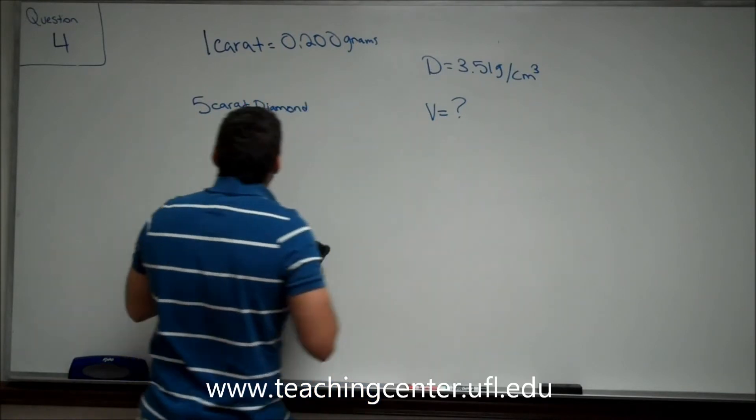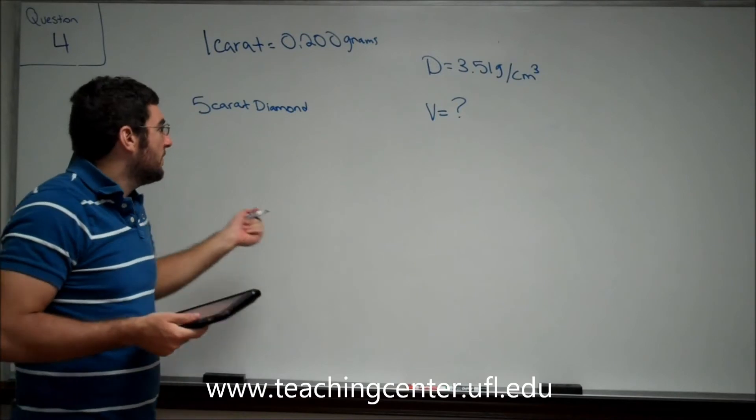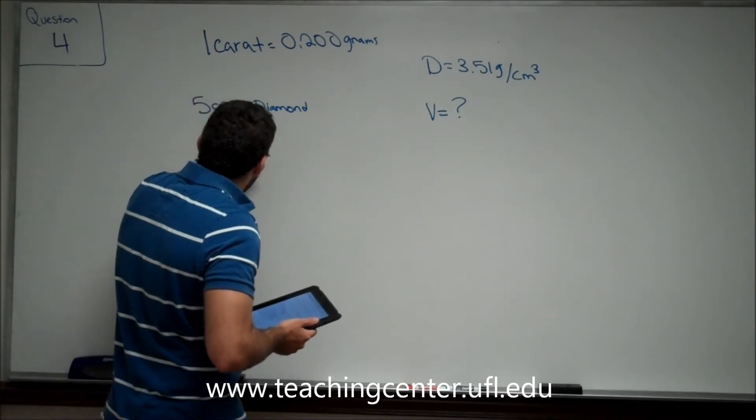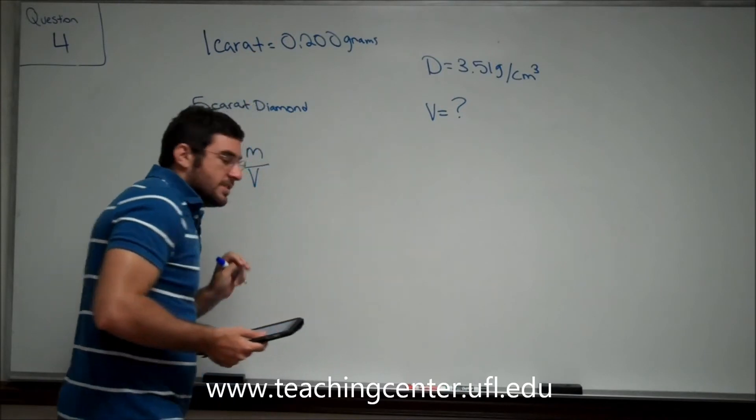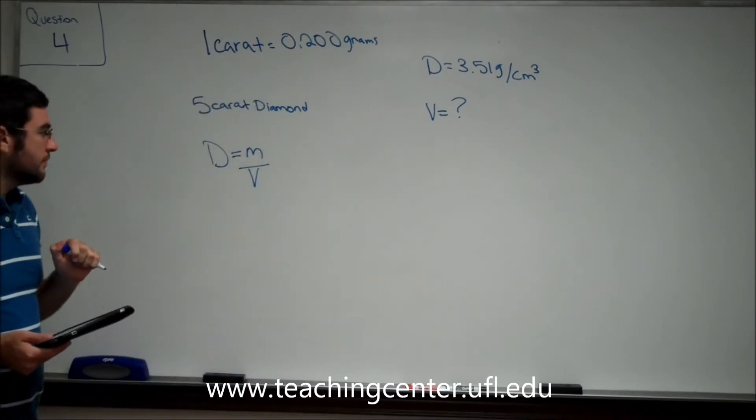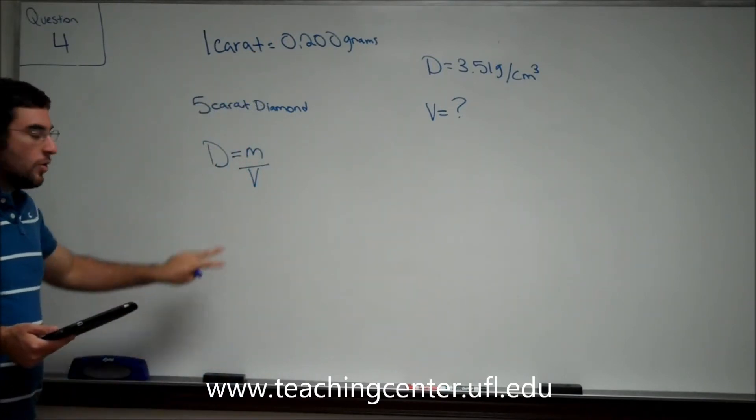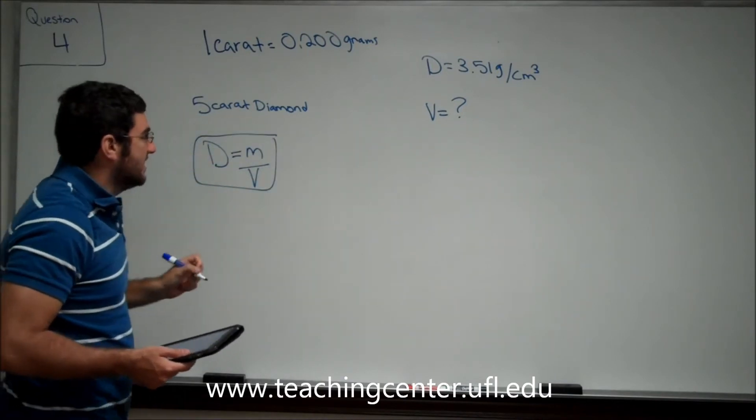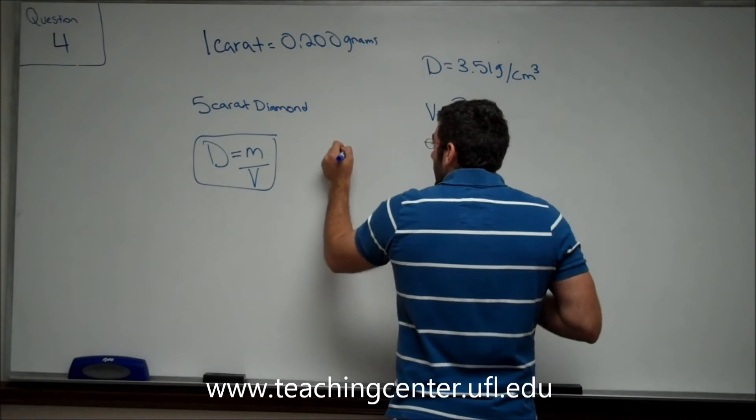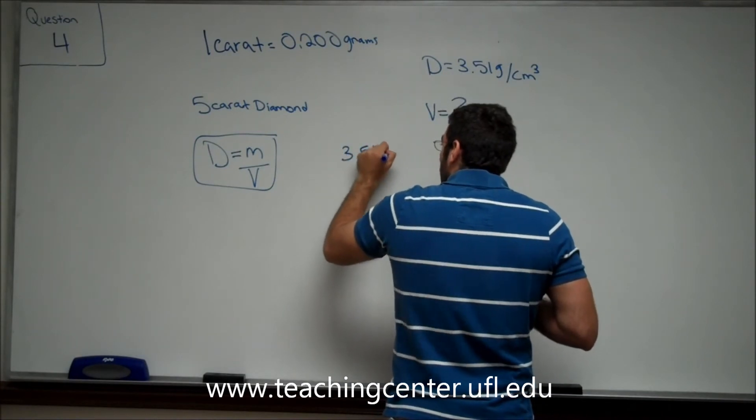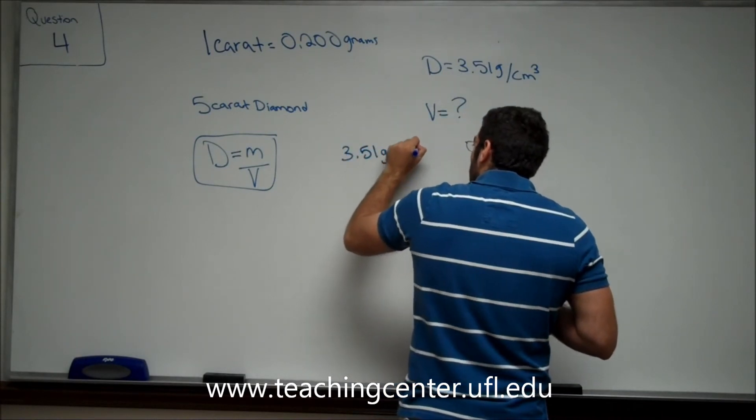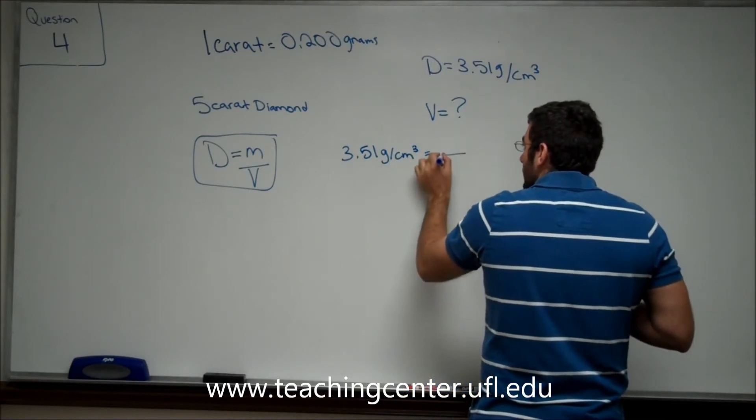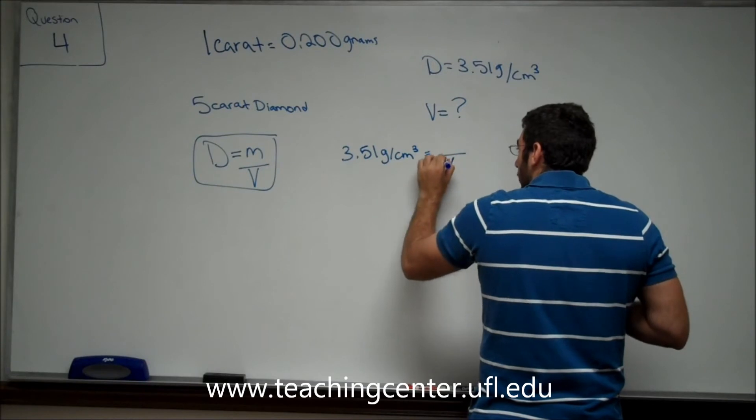The first thing we need to do is recall from what our professor taught us, that density is equal to mass divided by volume. In order to use this equation, we need to have our density, which we said is 3.51 grams per cubic centimeter, equal to our mass over our unknown volume.